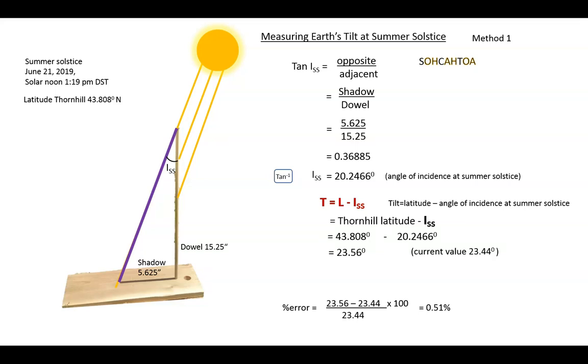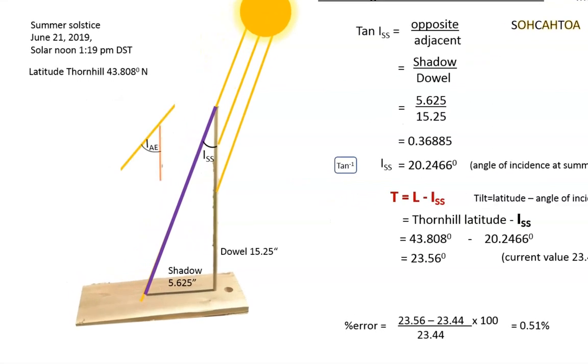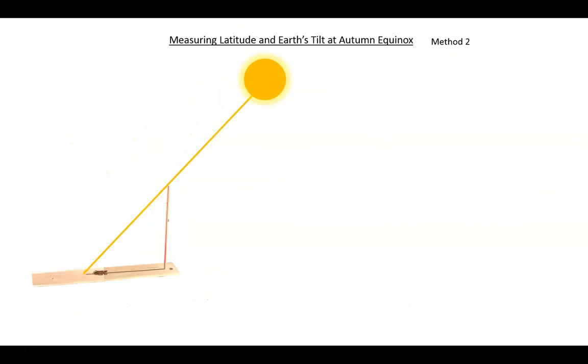I need to point out that at the autumn equinox, which is next, the angle of incidence will be labeled IAE like this, and at the winter solstice it will be labeled IWS like this. They are all the same angle that the earth makes with the sun. I'm just identifying them by when they occur. And by the way, my location in Thornhill is Ontario, Canada.